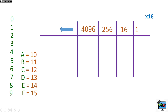Now let's write the number 27 in hexadecimal. First, find the closest column to 27. Can we use 256? No, far too big. The next column down is 16. There's no single symbol to represent 27 — the maximum single symbol is 15, which is f. So we need two symbols.